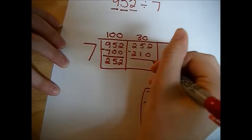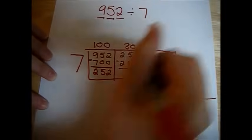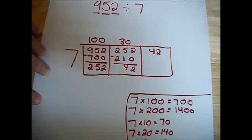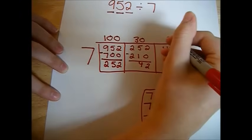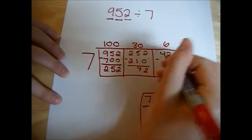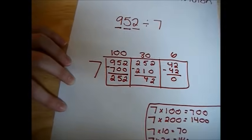We run our subtraction, and that leaves us with 42. So we move 42 to the last box. We remember from our multiplication tables that 7 times 6 is 42. So we can just put 6 on the top, subtract 42, and we get 0.